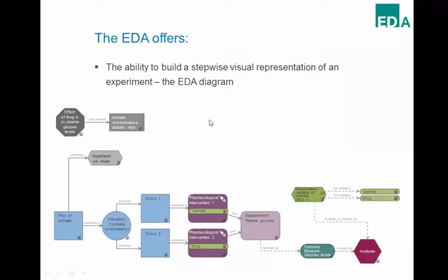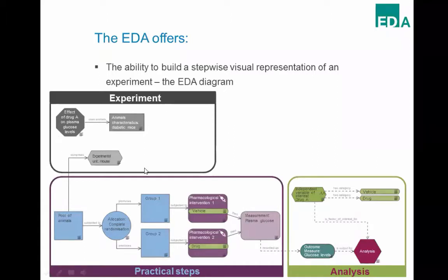In the EDA, every experiment is represented by one of these diagrams, which are in three parts. The grey nodes provide high-level information about the experiment: hypothesis, effect of interest, animal characteristics, experimental units, and so on. The blue and purple nodes provide information about the practical steps in the lab — groups, interventions, measurements, and so on. The green and pink nodes are about the analysis and the variables included in the analysis.